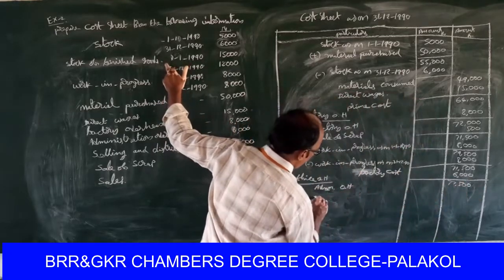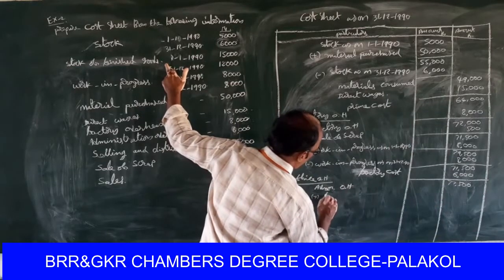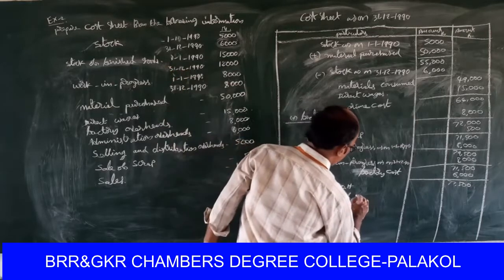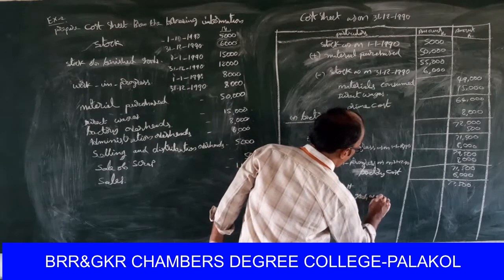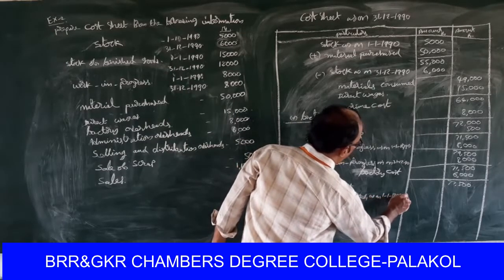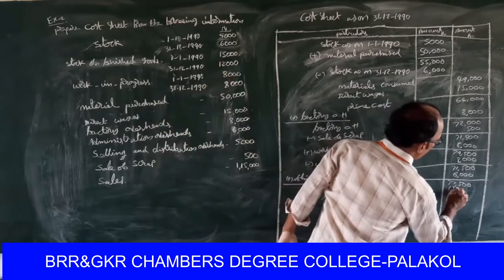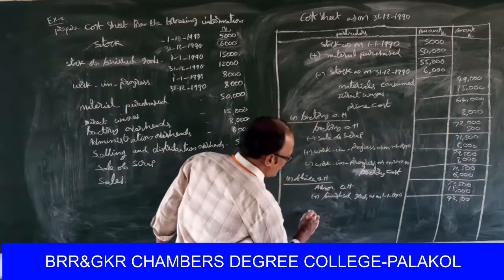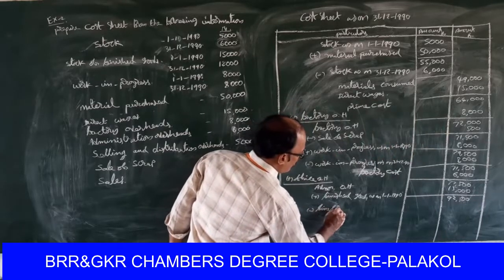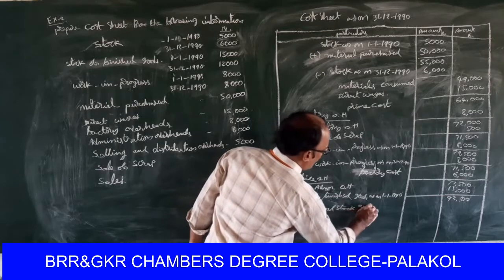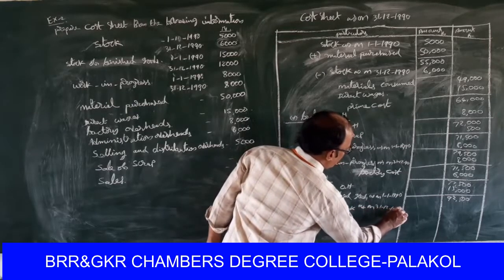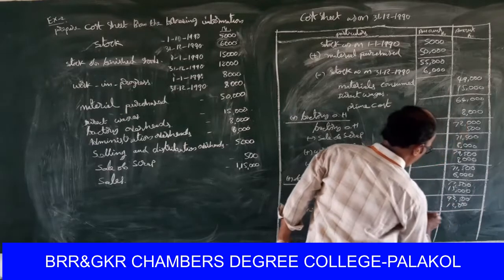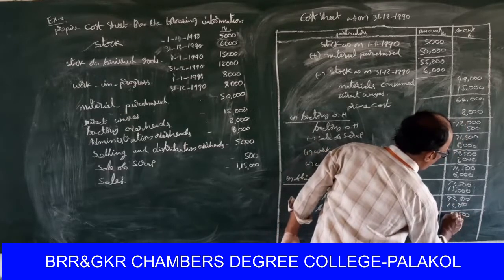Closing value of finished stock — add opening finished goods as on 1/1/1990: fifteen thousand rupees. Total is ninety-two thousand five hundred. Less finished stock as on 31/12/1990: twelve thousand rupees. Result is eighty thousand five hundred.